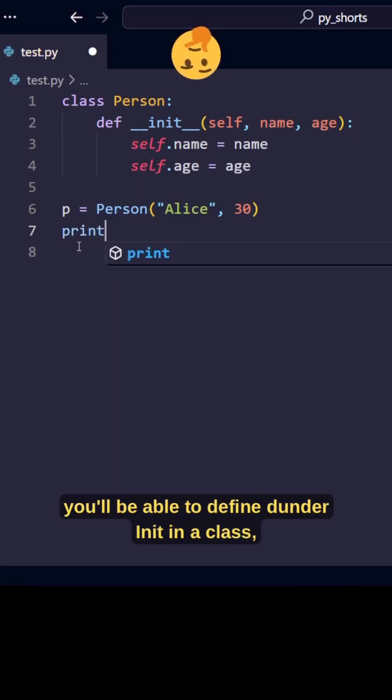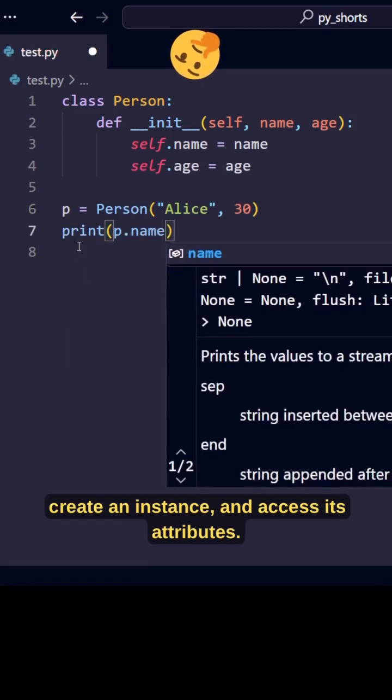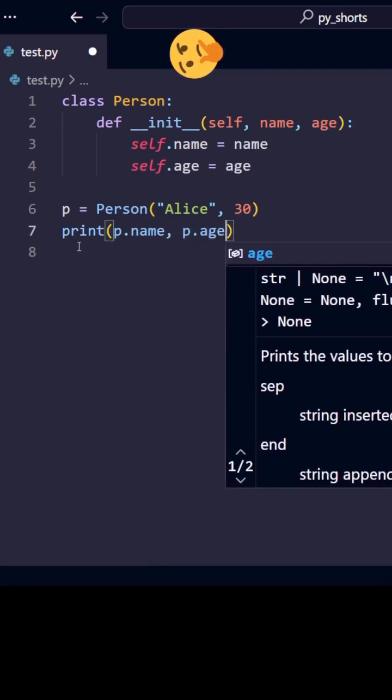After watching you'll be able to define DunderInit in a class, create an instance and access its attributes.